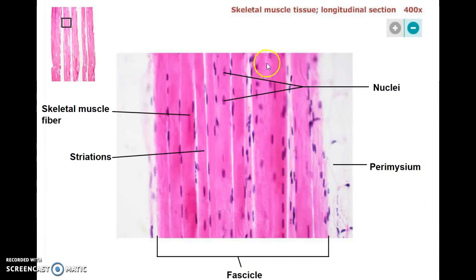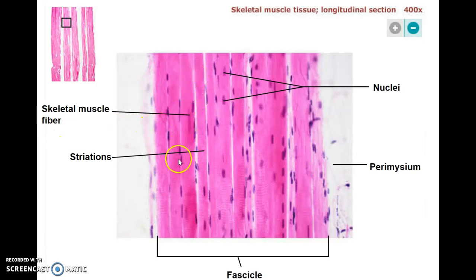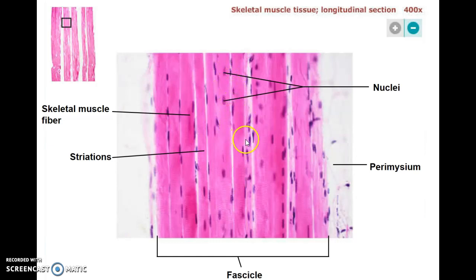So for starters, this is skeletal muscle tissue through the microscope at pretty high power, and you can see they're fairly large cells. The cells are running lengthwise on the slide here. They call them skeletal muscle fibers, but we'll just call them cells. They have striations, which we'll see much better in subsequent slides under higher power. And you can see multinucleated cells with those multiple nuclei out at the cell membrane — each one of these is a cell with its multiple nuclei.